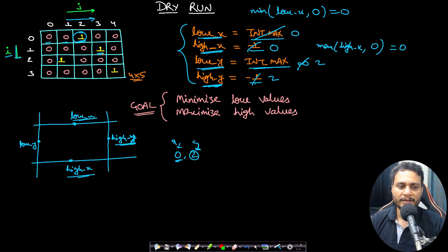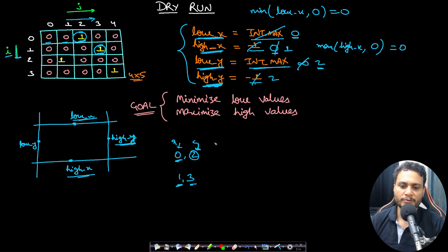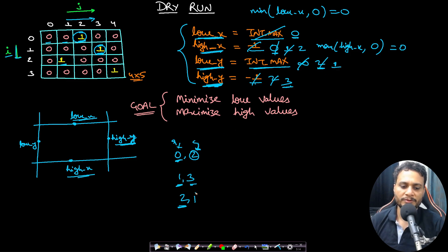Continuing the iteration, for the 1 at (2,1): lowX stays 0, highX becomes 2, lowY becomes 1, highY stays 3. For the last 1 at (3,4): lowX stays 0, highX becomes 3, lowY stays 1, highY becomes 4. We have now tracked all the extreme row and column values.